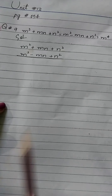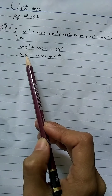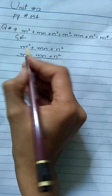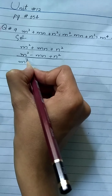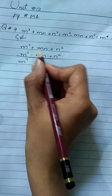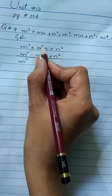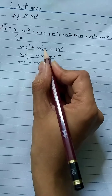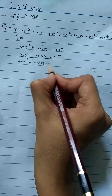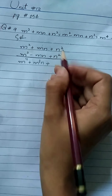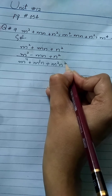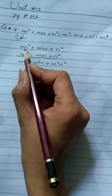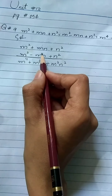Okay students, let's solve it. First we write the two expressions and multiply them. m² multiplied by m² gives m⁴. Then m² multiplied by mn gives m³n. Then m² multiplied by n² gives m²n². Now the second term: minus mn multiplied by m² gives minus m³n.